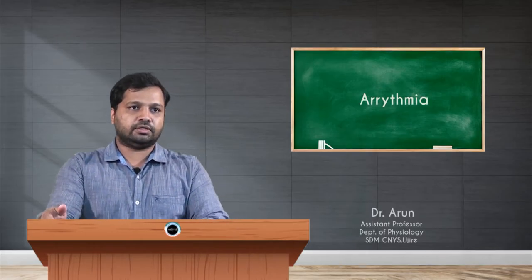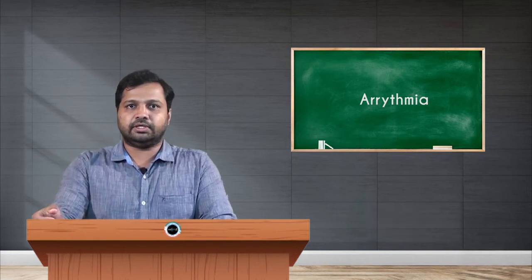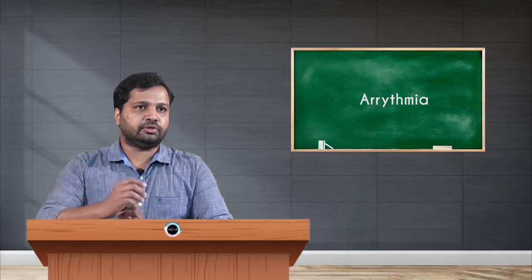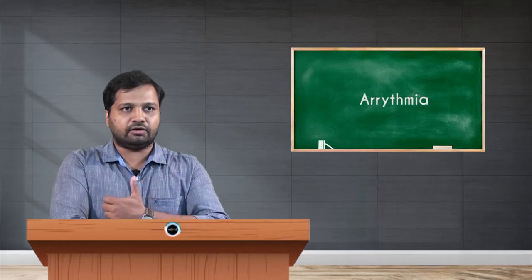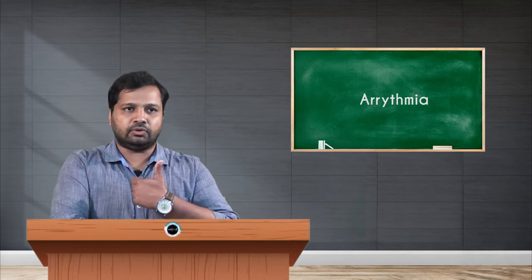Welcome to the session. Today we are going to see about arrhythmia, which is nothing but the irregular heartbeat. Before going into what is an irregular heartbeat, we will briefly cover the normal rhythm of the heart. The heart rate is the amount of beats or mechanical activity taking place in the heart, and it should be around 60 to 100 beats per minute. The heartbeat should be originating from the SA node.